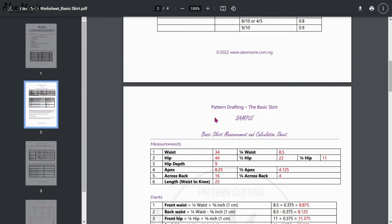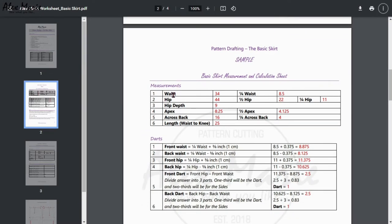Then we have a sample page where I have filled in some example measurements: waist 34, then you need a quarter of the waist, then your hip measurement, half the hip measurement, a quarter of the hip measurement, then you need your hip depth, apex, half apex measurement, across the back measurement, a quarter of across the back, and finally the length of the skirt.